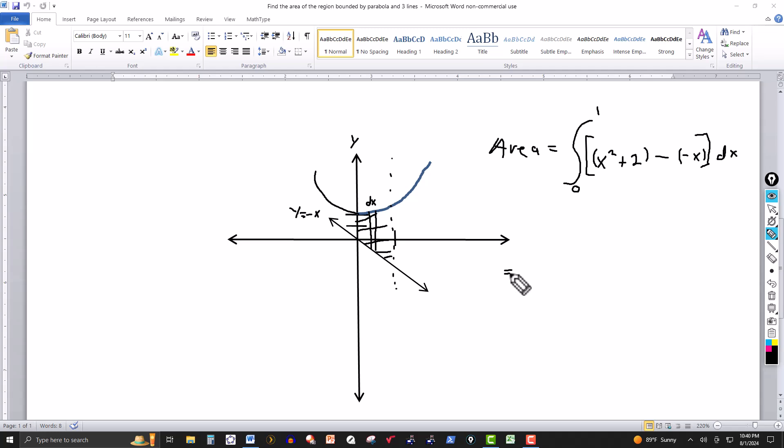From 0 to 1, we got x squared plus 2, and then a minus minus gives me an x, so I can rewrite this as x squared plus x plus 2, dx. Then we just integrate with respect to x, so we've got a basic polynomial here.